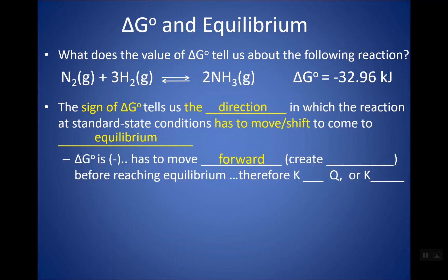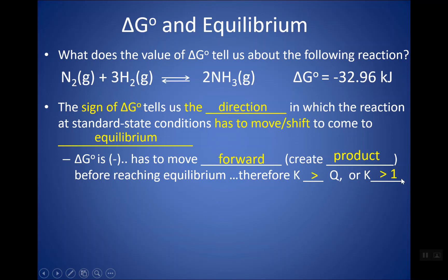Delta G negative means you're going to be moving forward — it's thermodynamically favorable going forward. And if you're going forward, you are creating product. Let's think about our equilibrium constant expression: product is in the numerator. So as you go forward and you're creating more product, your ratio of product over reactants raised to the power of the coefficient — the equilibrium constant — it's going to end up being a pretty big value by the time you get to equilibrium. So it would make sense that your K is actually going to be a lot bigger than one.